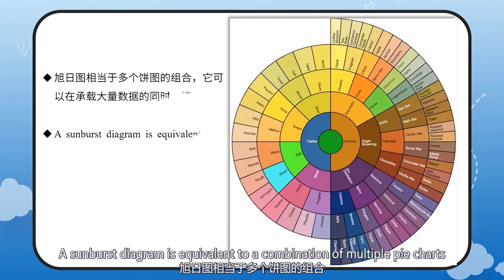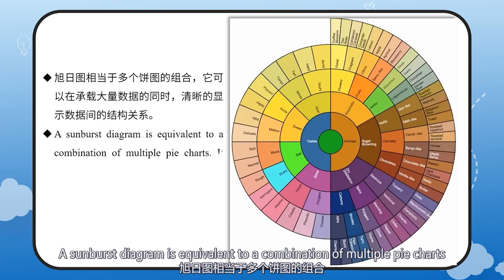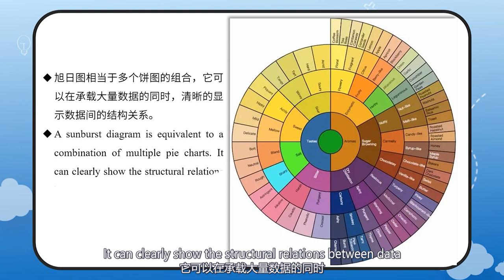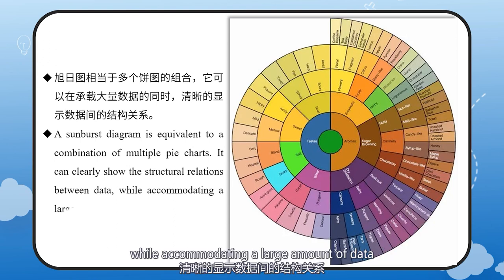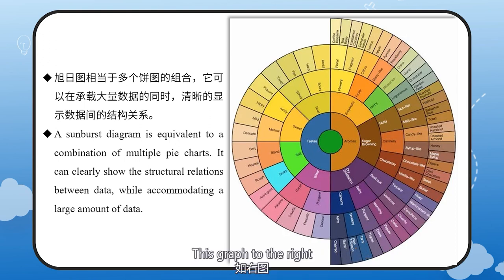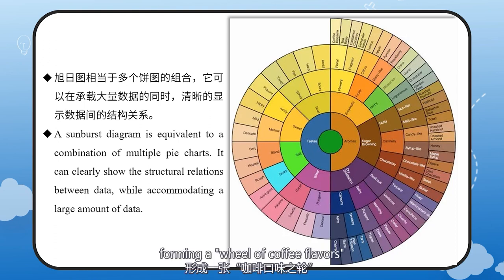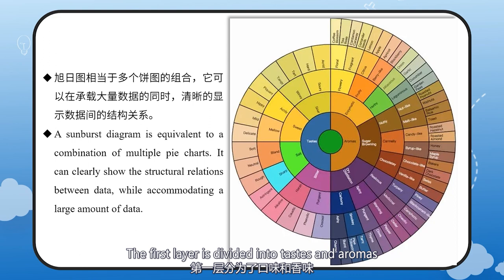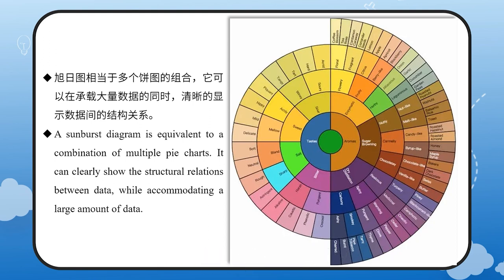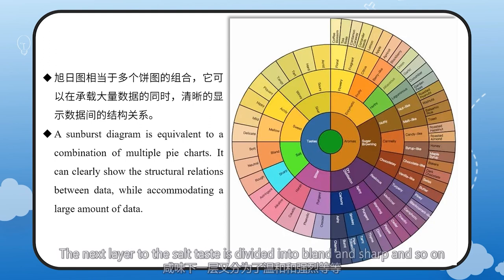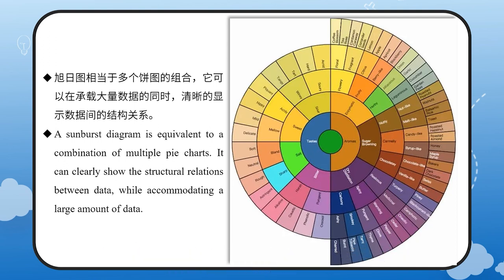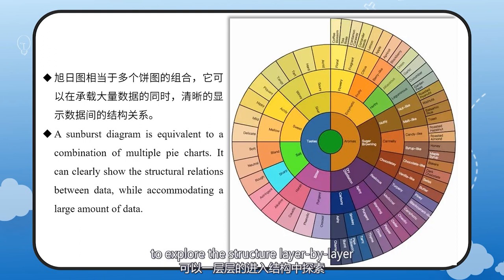A sunburst diagram is equivalent to a combination of multiple pie charts. It can clearly show the structural relations between data while accommodating a large amount of data. This graph to the right sorts out the coffee family, forming a view of coffee flavors. The first layer is divided into taste and aromas, whereas taste is further divided into sour, sweet, salt, and bitter. The next layer to the salt taste is divided into bland and sharp, and so on. Its interactive feature allows users to explore the structure layer by layer.